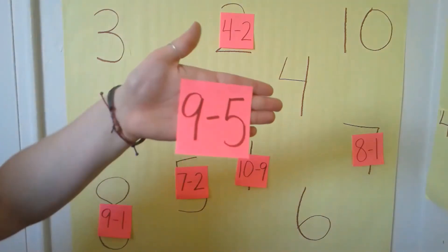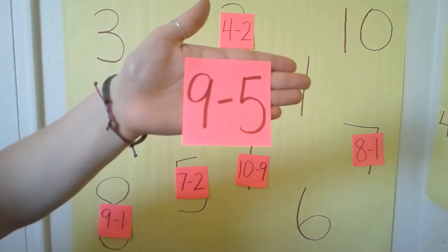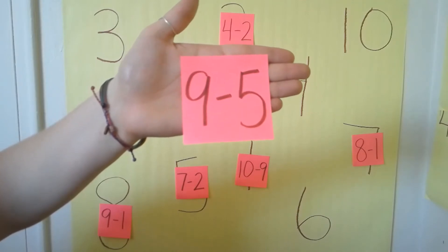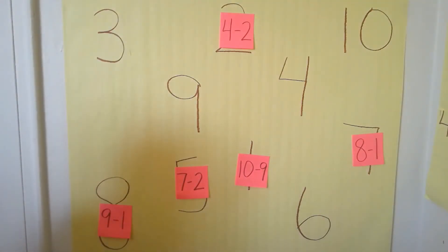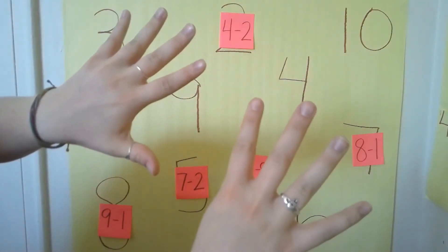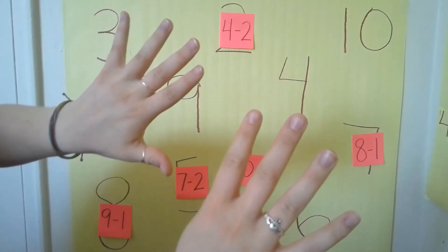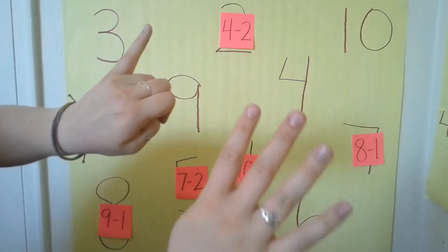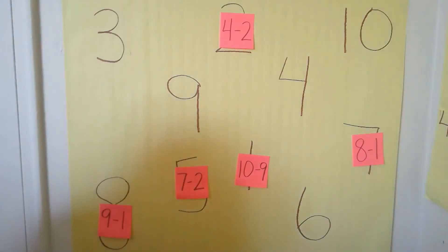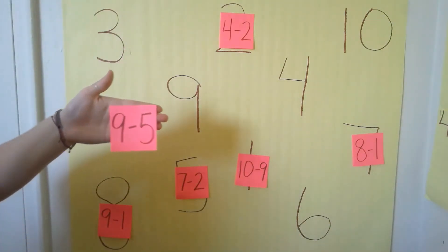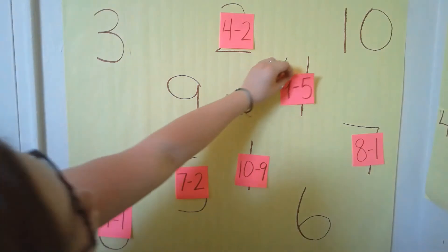Our next number sentence is nine minus five. What do you think the answer is for nine minus five? Let's check our work. First we hold up nine fingers — that's the first number in our sentence. How many do we take away? Five. So we're going to take away five. One, two, three, four, five. How many fingers are left? Four. So our answer to nine minus five is four. Can you find the four? Right over here in the middle.